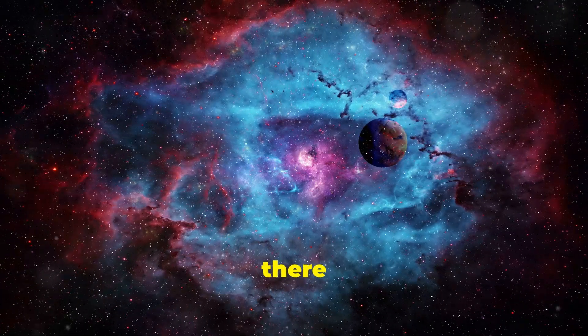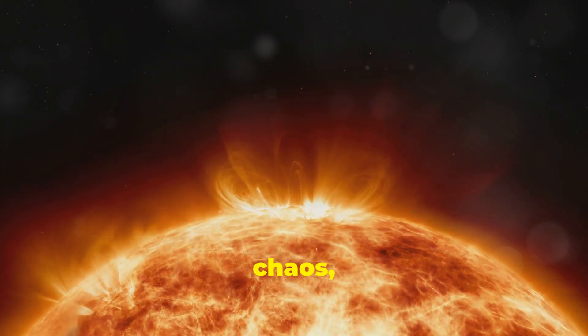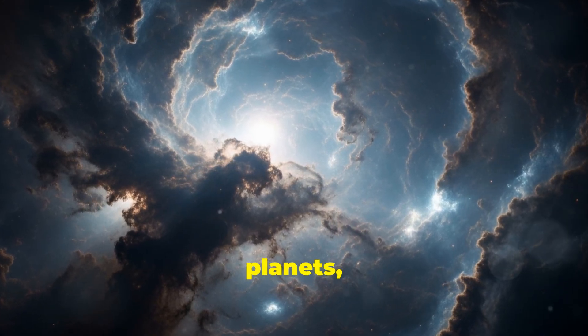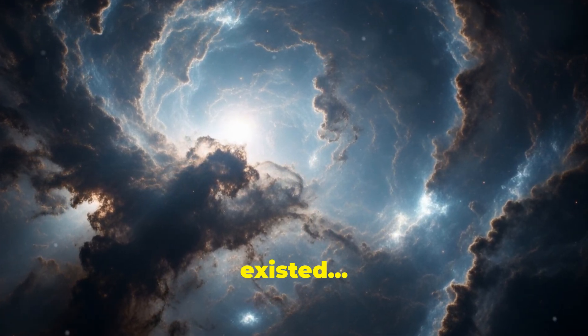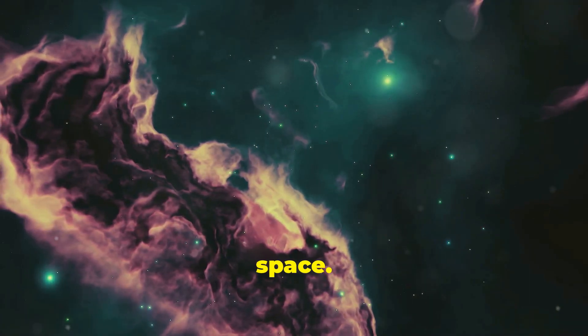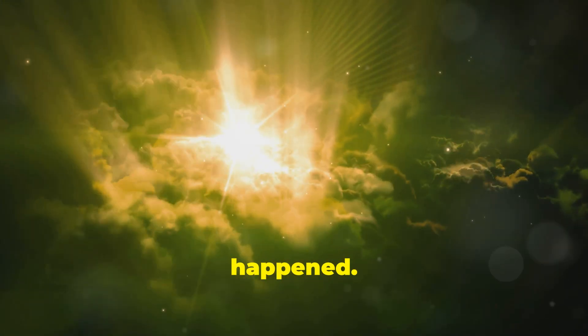Before Earth, before us there was chaos, and out of that chaos the Sun was born. Before there was Earth, before there were planets, before life even existed, there was just a cold dark cloud floating in space. But then, something happened.